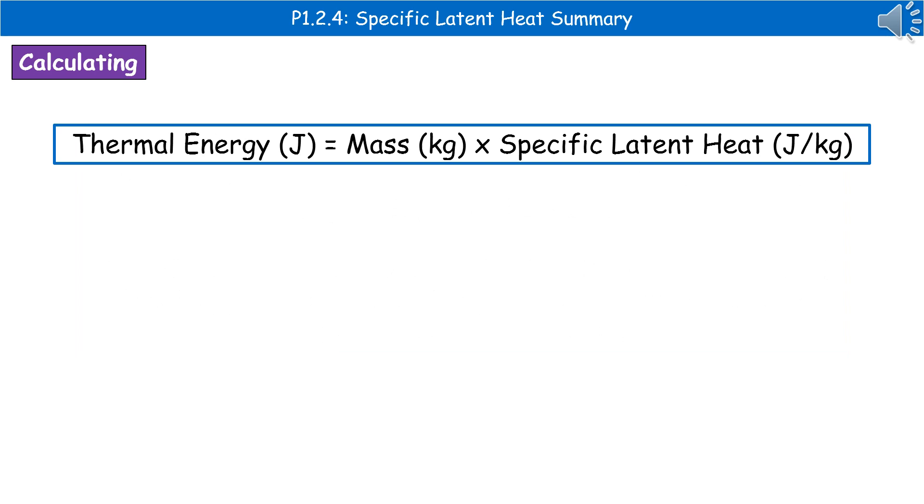So this brings us on to our equation and again the good news is that this is given to you on the physics data sheet so remember to flip over that other bit of paper on your desk because it will have this equation for you. So thermal energy in joules is the mass in kilograms times by the specific latent heat in joules per kilogram.